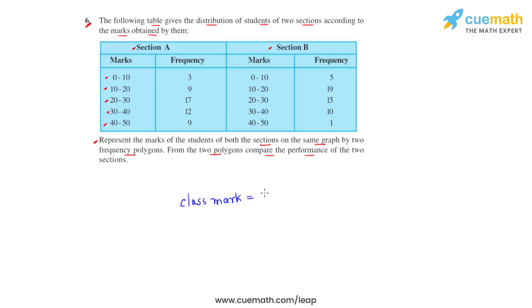The class mark can be found by adding up the upper limit and the lower limit of a particular class and dividing it by two. Let's take the first class into consideration, which is from 0 to 10. For this particular class, the upper limit is 10, so let's add 10 with the lower limit of the class itself, which is 0, and divide by 2, so we get 5 as the class mark for the first class interval. Similarly, if we take the second class interval into consideration, we will have to add 20 and 10 and divide by 2, so we get 30 divided by 2, which gives us 15. So 15 is the class mark for the second class interval.